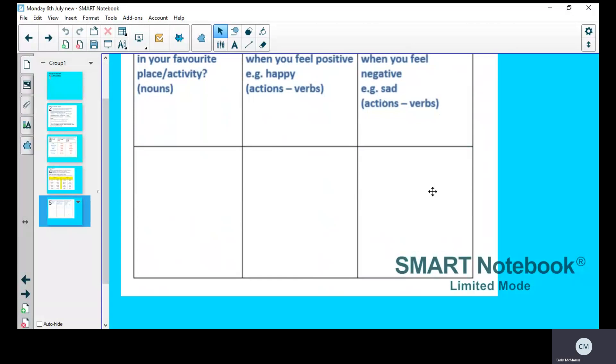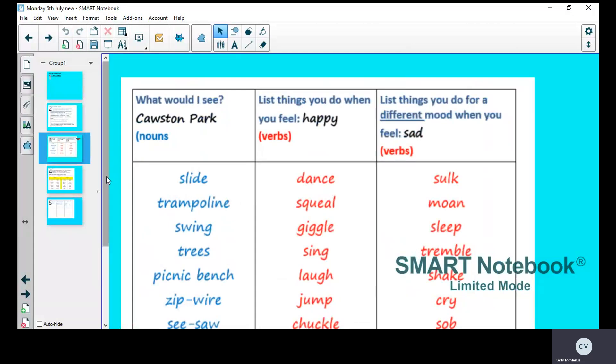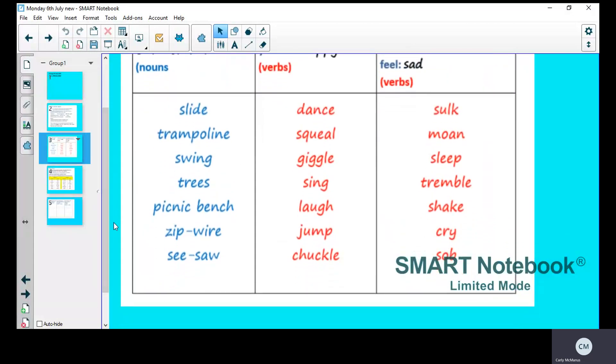If you're stuck, you can message us on the blog. Have another look at mine. This is to do with a park. I don't want you to do a park because I've already done it. So you can choose somewhere else. And then you can message us on the blog if you need any help. If not, I'll speak to you tomorrow. Bye.